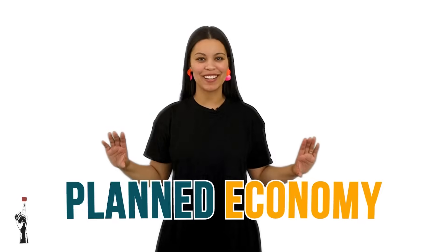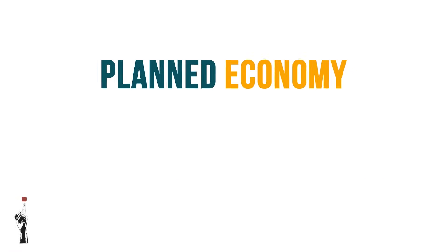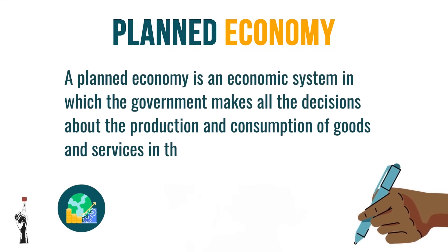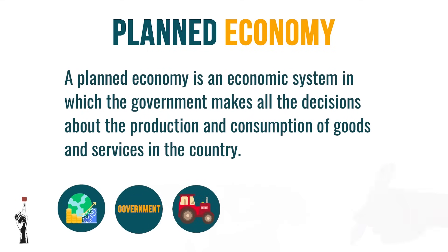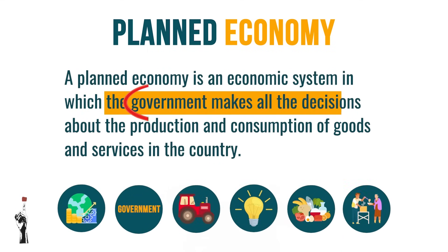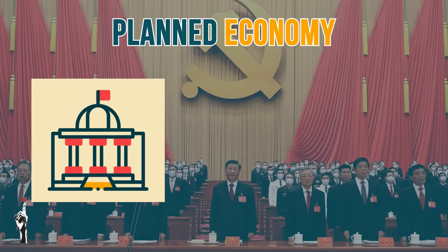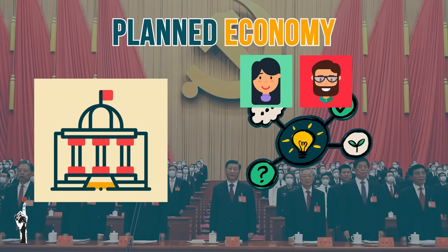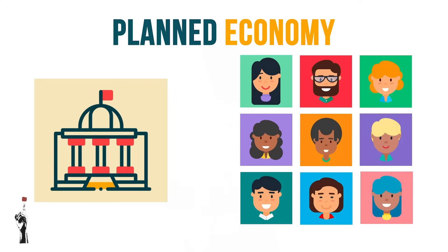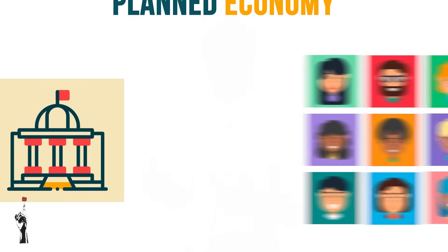This system is called the planned economy. A planned economy is an economic system in which the government makes all the decisions about the production and consumption of goods and services in the country. The government bases their decisions on what they think is good for the citizens of the country.